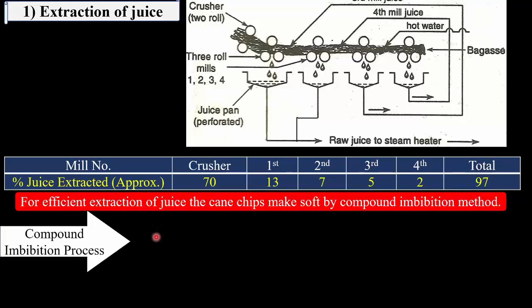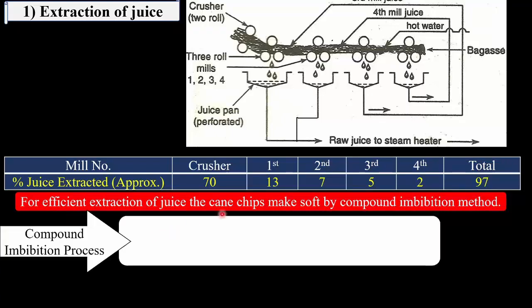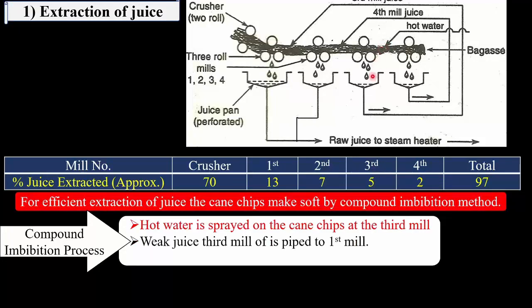In the compound imbibition method, hot water is sprayed on the cane chips from the third mill. The weak juice of the third mill is piped to the cane chips from the first mill, and the weak juice of the fourth mill is piped to the cane chips from the second mill.